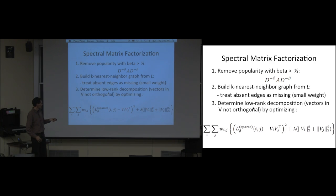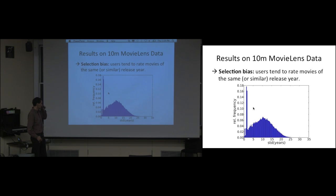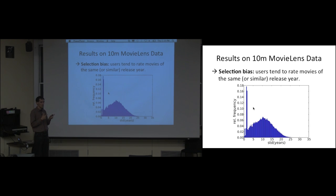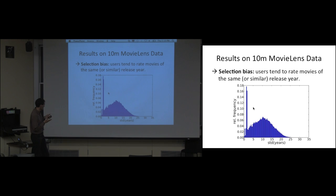This uses the same objective function described at the beginning and takes only a few minutes to optimize. However, there's another huge selection bias in the MovieLens data: users tend to rate movies together if they have the same or similar release year. Calculating the standard deviation of release years for each user's ratings, there's a huge peak — many users rate movies within about two years of each other. If we just apply the approach naively, we only learn what movies were released at the same time, not which are action movies or kids' movies.